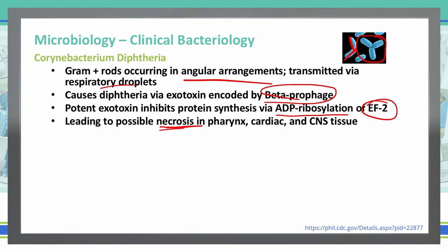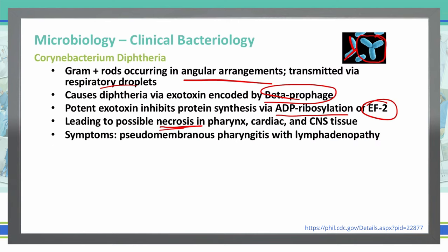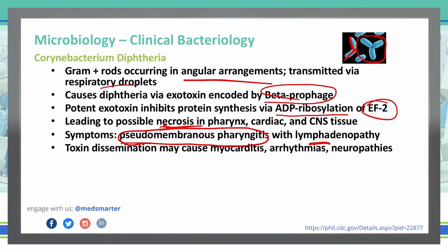This necrosis is where we get the diphtheria symptoms. We can see pseudomembranous pharyngitis, which is necrosis of the pharynx, as well as lymphadenopathy alongside it. The toxin can then be disseminated throughout the body, causing myocarditis, arrhythmias, and neuropathies.